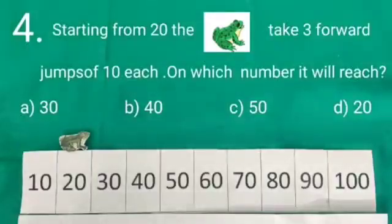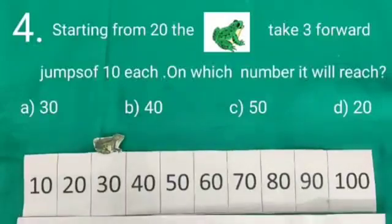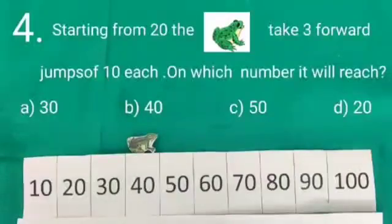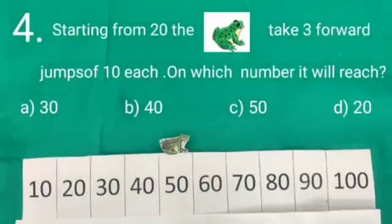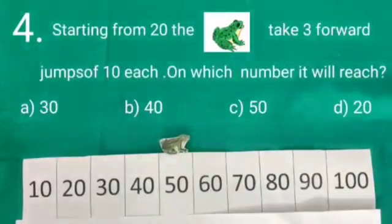While jumping of 10 each, frog will reach from 20 to 30. Again jumping of 10 each, frog will reach from 30 to 40 in his second attempt. While jumping of 10 each, frog will reach from 40 to 50 in his third attempt. Like this way, we have seen.